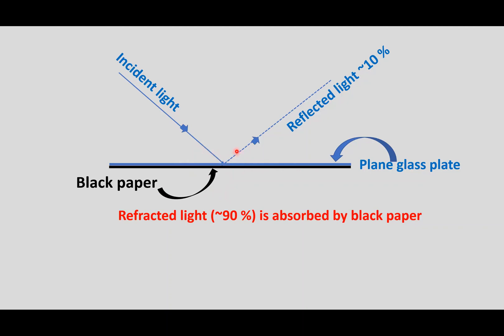One, the reflected part, about 10% will go in this direction. And the 90% light will get refracted, passed through the glass plate. But as soon as it passes through, it will strike the black paper. And black color absorbs all the light.